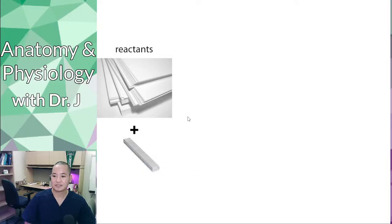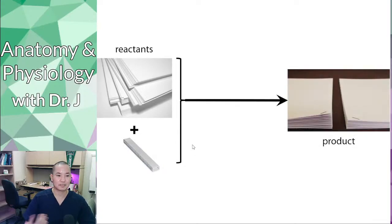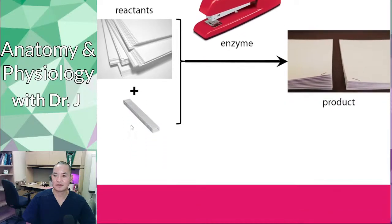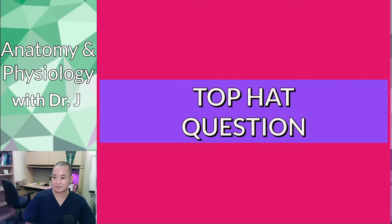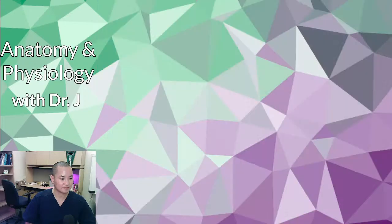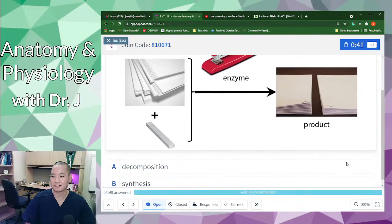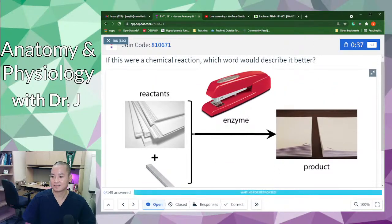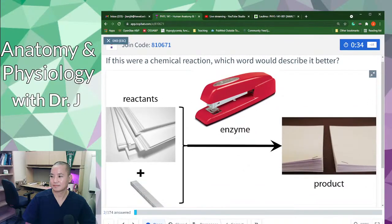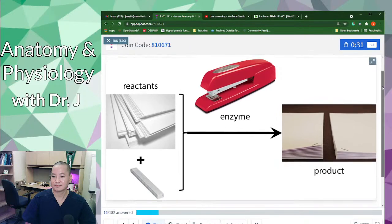You can have enzymes that help with anabolic reactions and enzymes that help with catabolic reactions. Here's another example: paper and staples are your reactants, and you want to staple all the papers together to make a product. The enzyme in this case would be the stapler. Top Hat question: if this were a chemical reaction, would it be decomposition or synthesis?